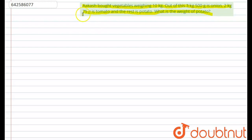So, here we can understand that Akash has bought total vegetables. Total weight of vegetables is 10 kg.